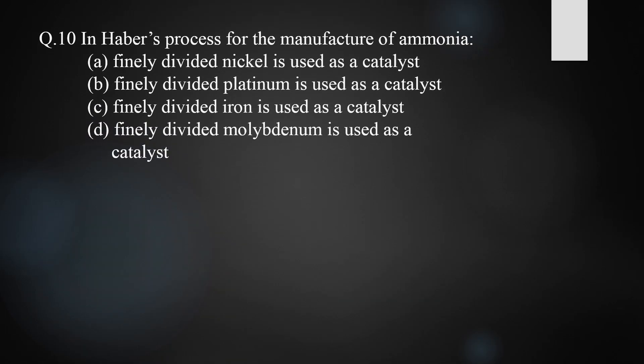Question ten: in Haber's process for the manufacture of ammonia, which catalyst is used? Options include finely divided nickel, platinum, iron, and molybdenum. The correct answer is finely divided iron. In Haber's process, iron is used as the catalyst, while molybdenum acts as a promoter that enhances the activity of the iron catalyst in the manufacture of ammonia.